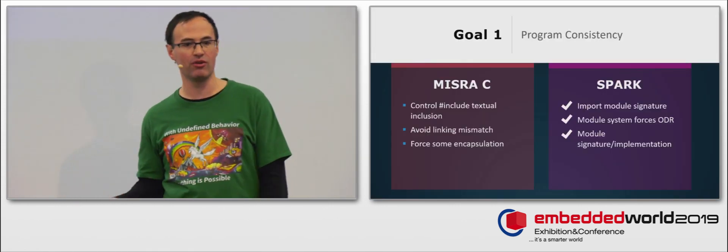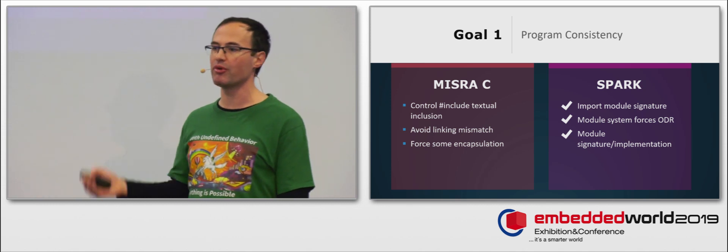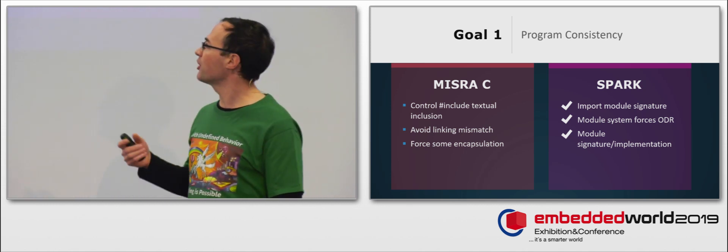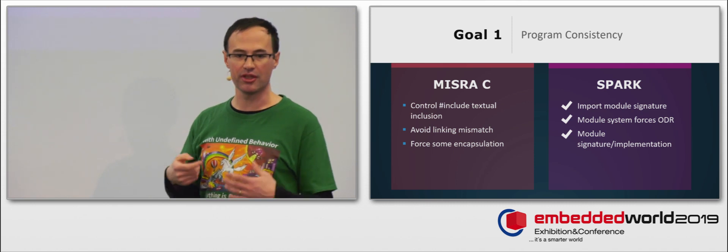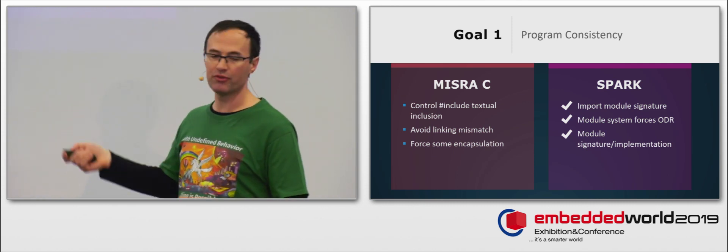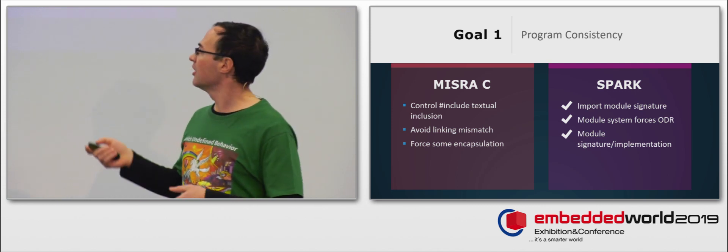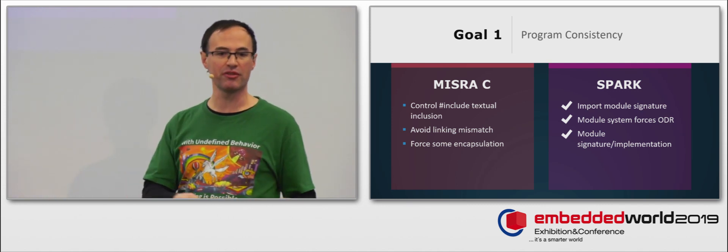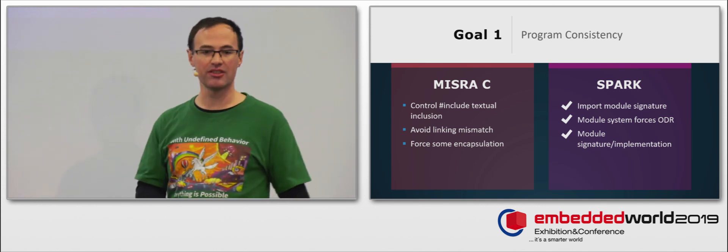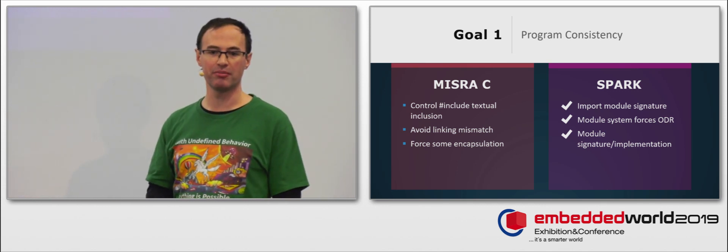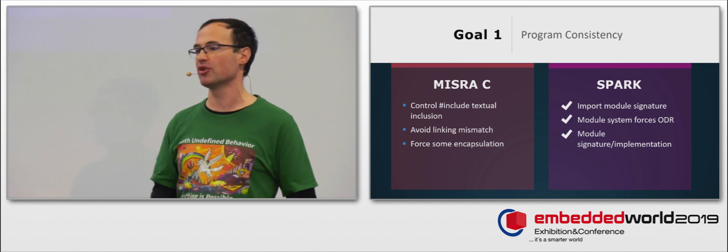At the most basic level, MISRA C aims at ensuring program consistency. This requires controlling include directives they use, checking for possible link time mismatch, enforcing encapsulation of data whenever possible. All that is immediately achieved when you use Spark by relying on the Ada module system.